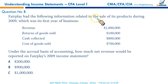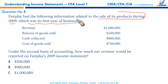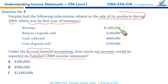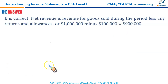Fair Play had the following information related to the sale of its products during 2009, which was its first year of business — meaning no opening stock. Under the accrual basis of accounting, transactions are recorded when they are incurred, not when cash is received or paid. Net revenue is revenue minus returns of goods sold: 1 million less 100,000 gives you 900,000. Very straightforward.